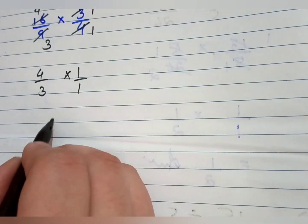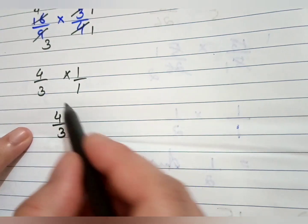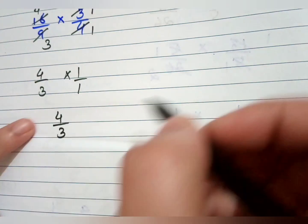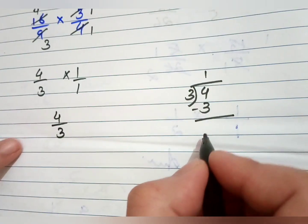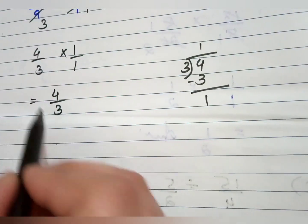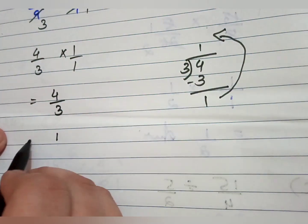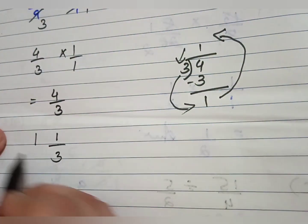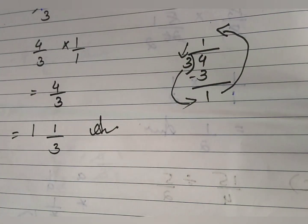We get the improper fraction 4 over 3 because the numerator is bigger. Divide 4 by 3: 3 ones are 3, 4 minus 3 equals 1 remainder. Write in mixed form: quotient is 1, remainder is 1, divisor is 3. So 1 and one-third is the answer for Part D. That covers all of Question 3.